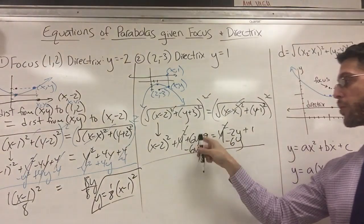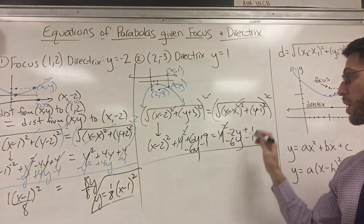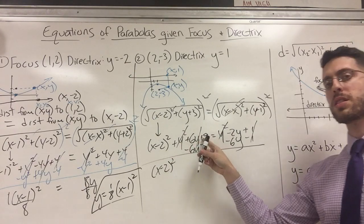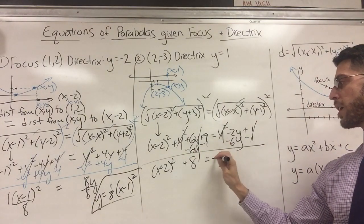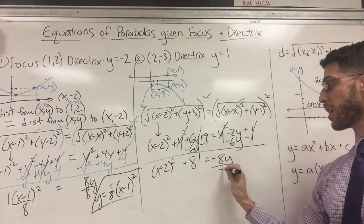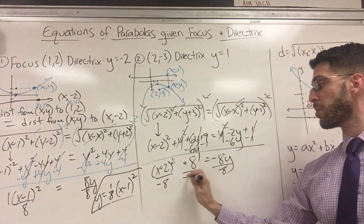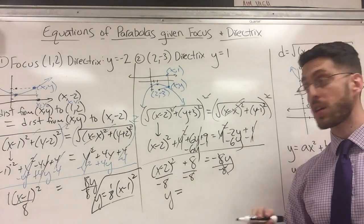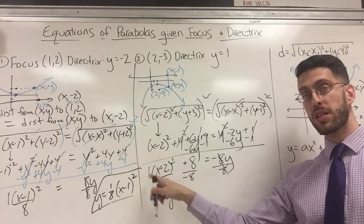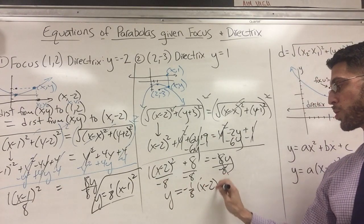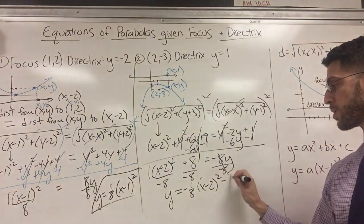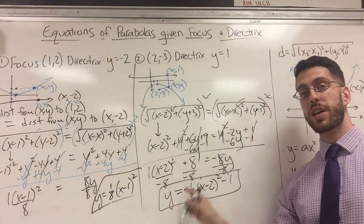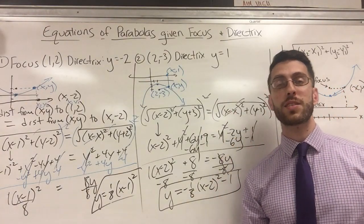Subtract y² from both sides — they cancel. Subtract 6y from both sides and move the constant: (x−2)² + 9 − 1 = −8y, so (x−2)² + 8 = −8y. Divide everything by −8 to isolate y: y = −(1/8)(x−2)² − 1. The vertex is (2, −1), which we already knew, and the negative coefficient confirms the parabola opens downward. Thanks for watching!